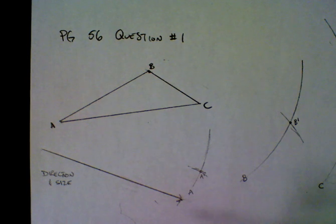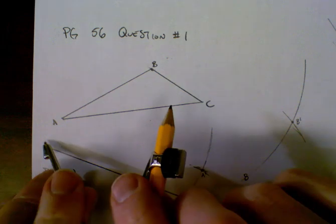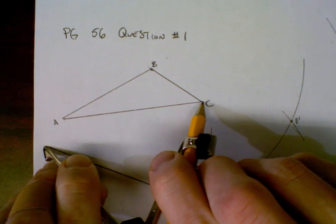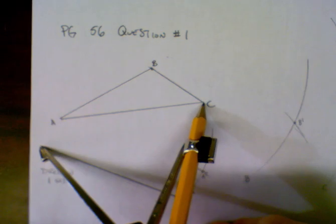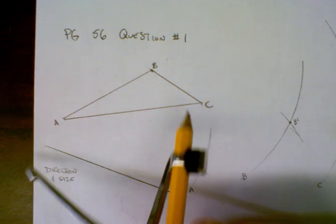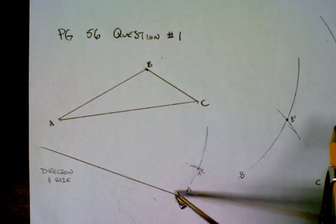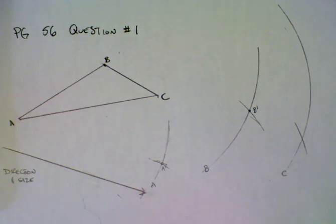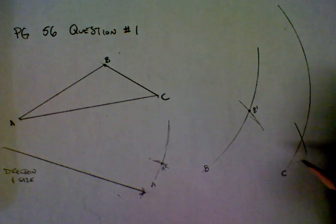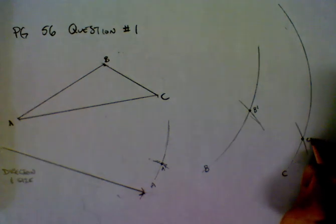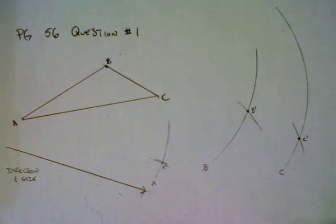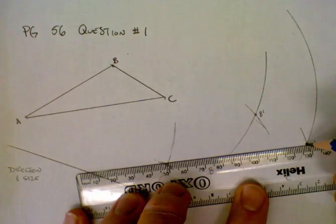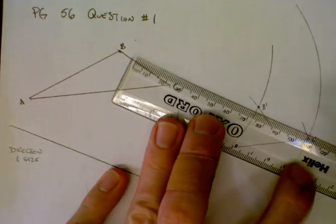I've done that for points A and B, and now I do it for point C. I put the back of the compass on the arrow and stretch my pencil to point C to measure that distance. Then I use that measurement going from the tip of the arrow to arc C, draw my arc, and where the two arcs intersect is point C prime. Now I have A prime, B prime, and C prime, so I use a ruler to connect the dots, giving me my translated figure.